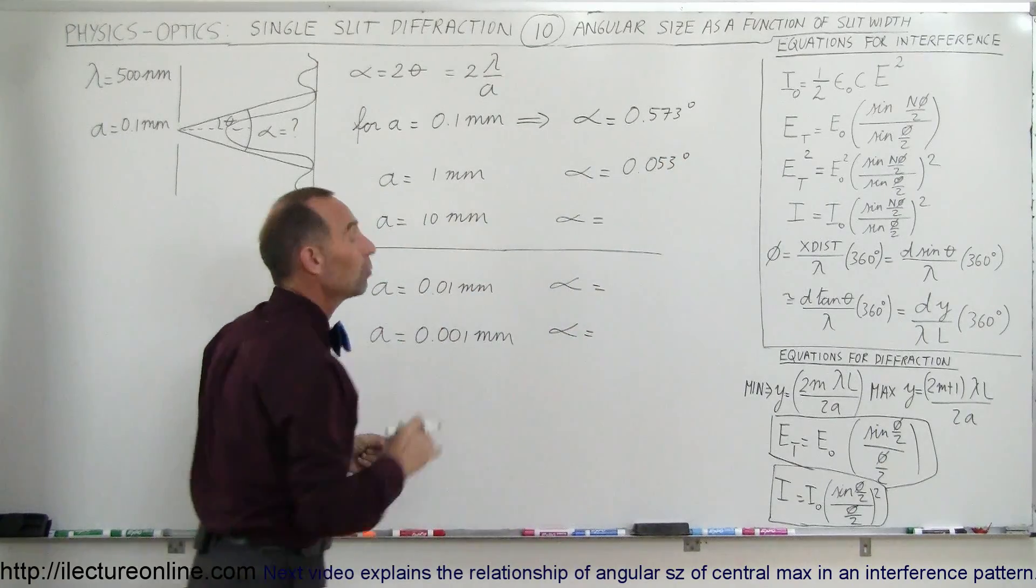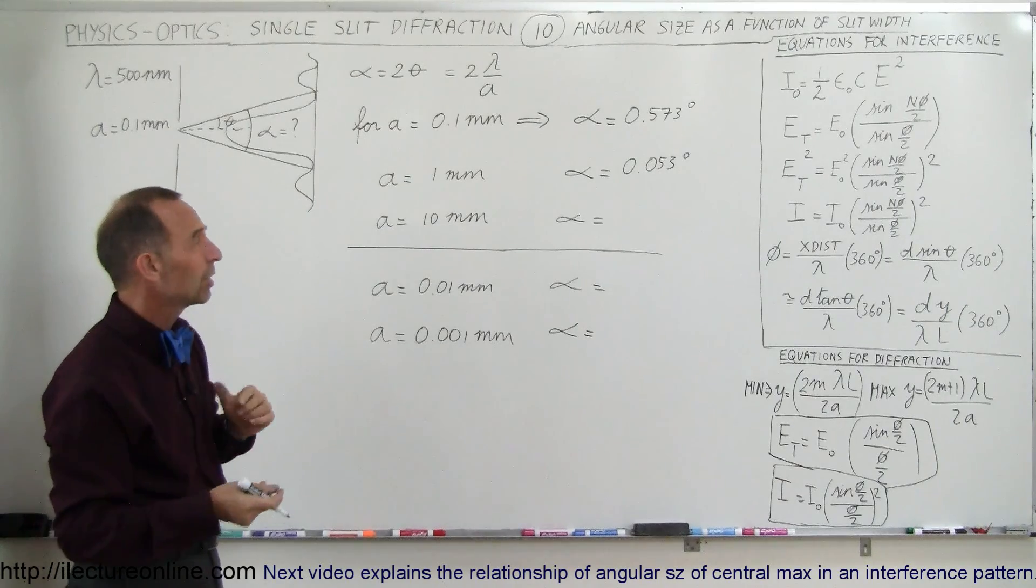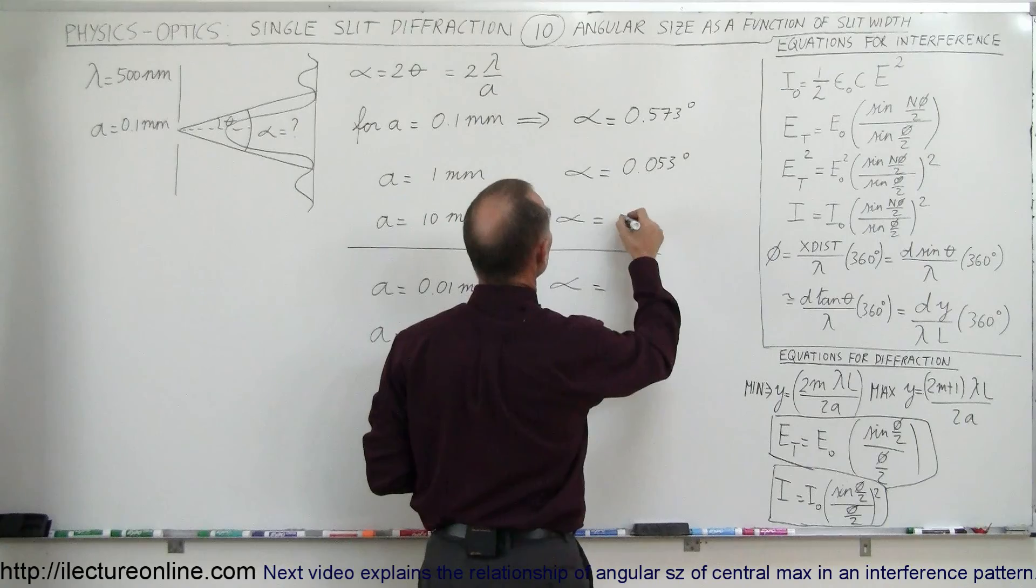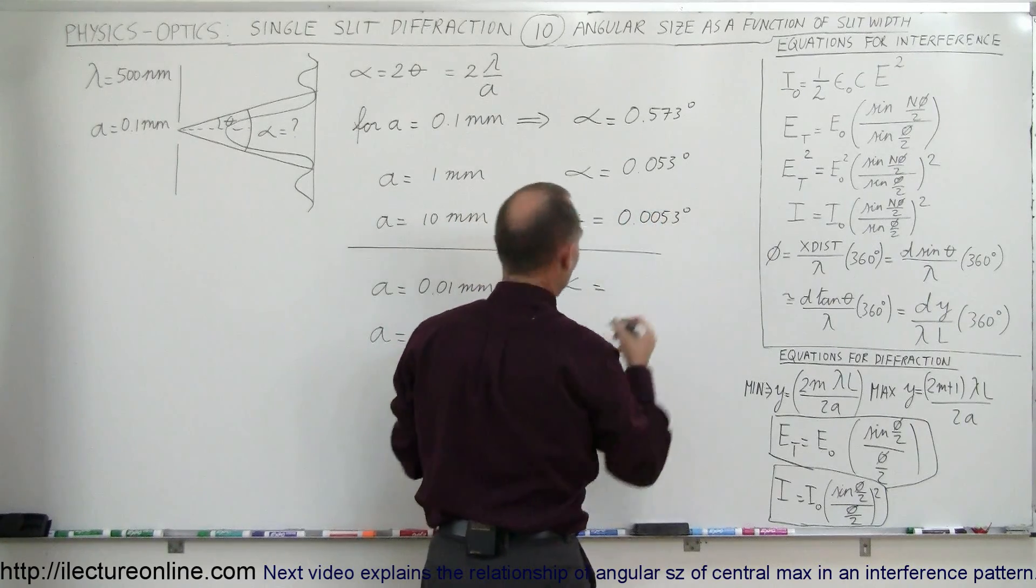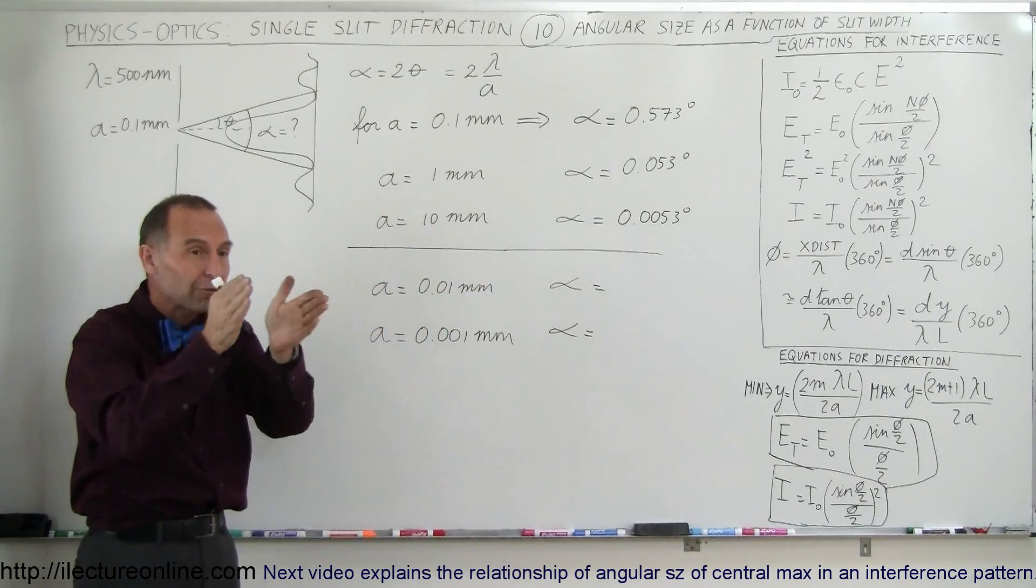And then if we make the slit width 10 millimeters, which of course is a whole centimeter, which is pretty big when we relate it to the wavelength of light, then you can see that the central maximum becomes 0.0053 degrees, and the diffraction pattern squeezes down to something very small.